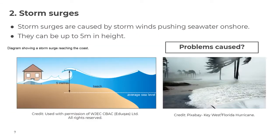The second hazard created by a tropical storm is storm surges. A storm surge is caused by strong storm winds pushing sea water onshore, flooding the coastline. They can be up to five metres in height. So not only do people have to contend with strong winds and heavy rainfall, but they may also face a flooded coastline caused by storm surges. These hazards make tropical storms particularly dangerous for human beings.